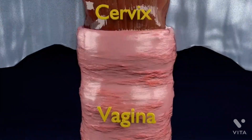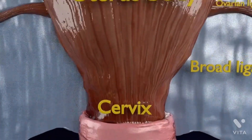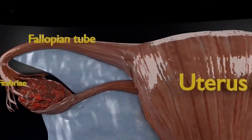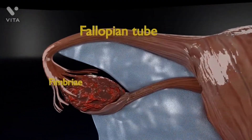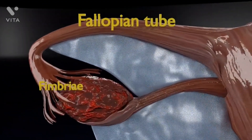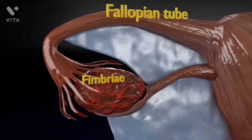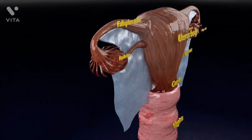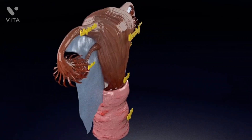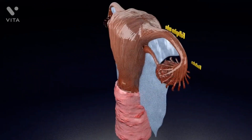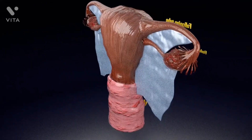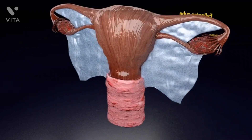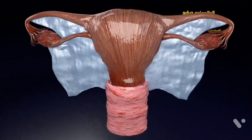The vagina allows for sexual intercourse and birth and is connected to the uterus at the cervix. The uterus or womb accommodates the embryo which develops into the fetus. The uterus also produces secretions which help the transit of sperm to the fallopian tubes, where the sperm fertilizes the ova which are produced by the ovaries.